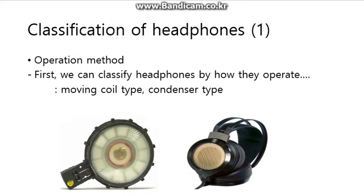The moving coil type is the most common type of headphone. Alternating current is inserted into an attached coil or vibrating plate located near a magnet. This induces a magnetic force; the coil interacts with the magnet, and that interaction is used to operate the headphone.